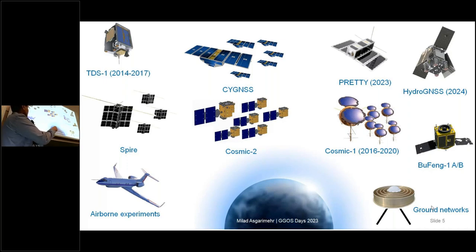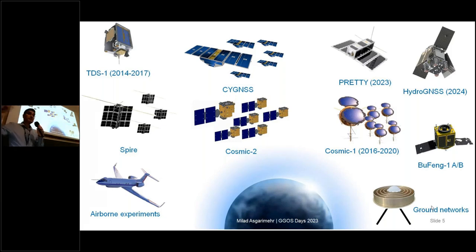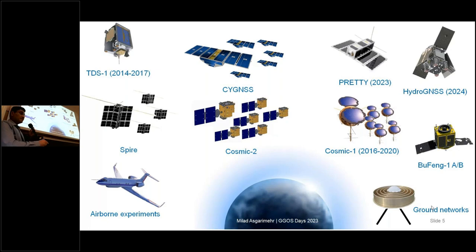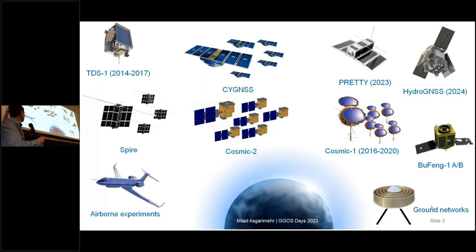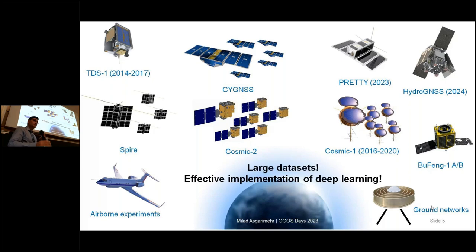Radio occultation missions are also there, like COSMIC. We have private sectors doing reflectometry and also radio occultations with numerous satellites, like Spire. We have another American startup which has already started, like Muon. And then we have ground-based stations which we already know, and also experiments that people are doing in different places — like airborne experiments and other kinds of experiments. So we can confirm that we have large data sets, which provide effective learning needed for deep learning.